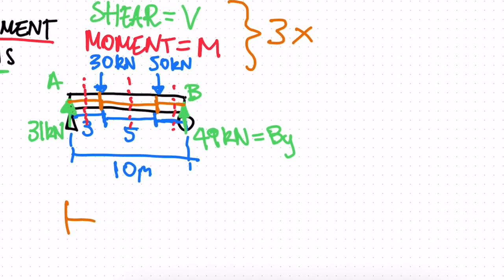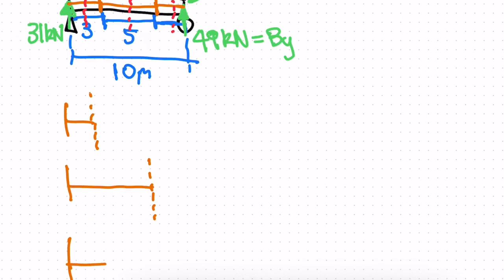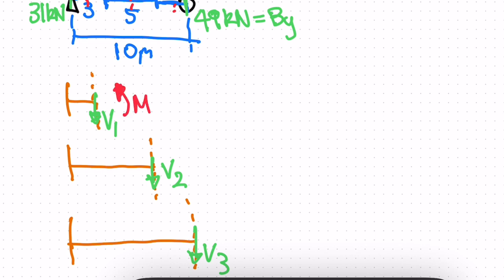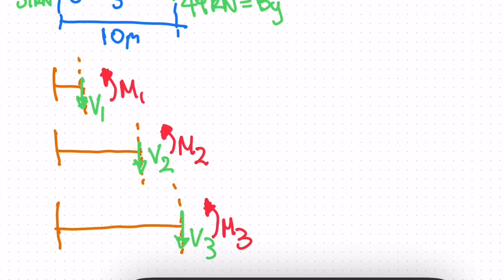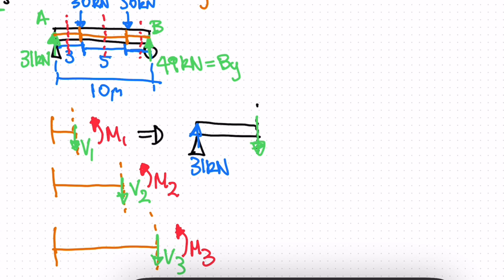Let's look at the first section. The first cut is here, the second section is cut here, and the third section is cut up to the end. So we have three beams: V1, V2, V3 for shear and M1, M2, M3 for moment. For the first section, we redraw the beam with 31 kilonewtons going up and our V1 shear. I assume the shear is acting downward and the moment M1 is acting in the anti-clockwise direction.